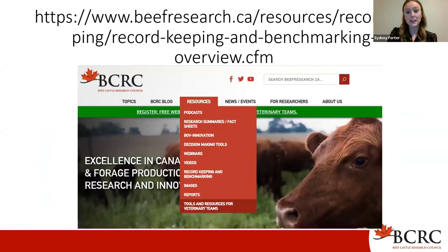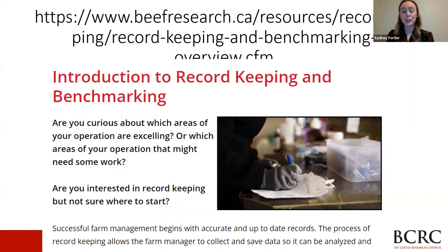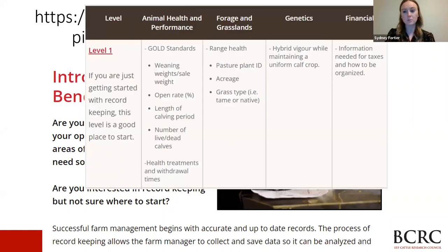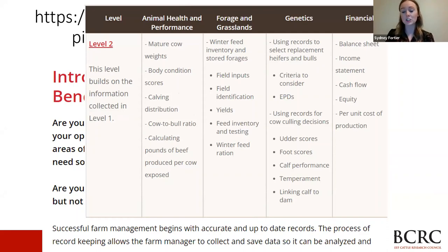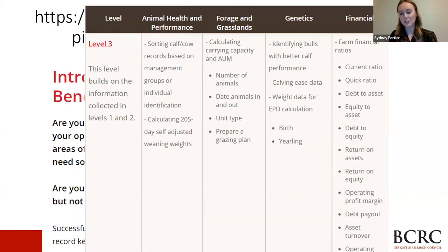We also have a record-keeping and benchmarking resource under our resources tab on our website. It goes over the basics of record keeping and why it's important, broken down into three levels. Level one is a great starting point for those not keeping records — how to start and what to record. Level two gets more in-depth on animal health and performance, forage and grassland, genetics, and financials. Level three builds on levels one and two and gives deeper insight into what the numbers mean.